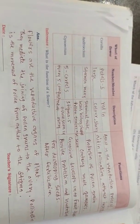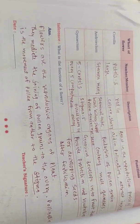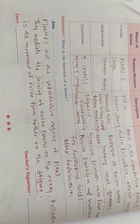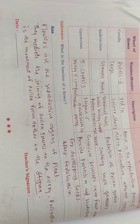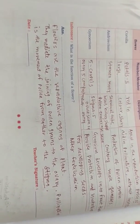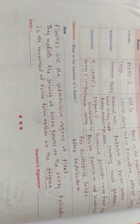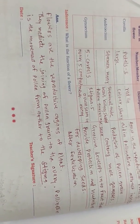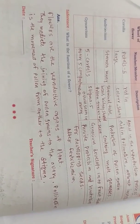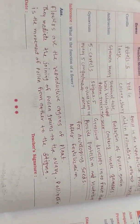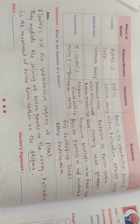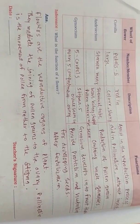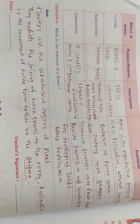These are the observations and inference. Flowers are the reproductive organs of plants. They mediate the joining of pollen grains to the ovary. Pollination is the transfer of pollen grains from the anther to the stigma.